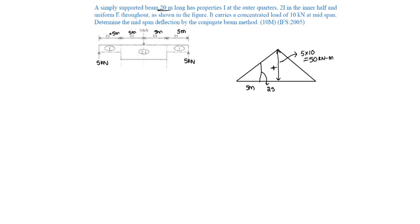Let us draw the curvature diagram now. Till here it is EI, so this will be, total will be 25 by EI. This is 25 by EI. From here it changed to 2EI, so here it will be 12.5.